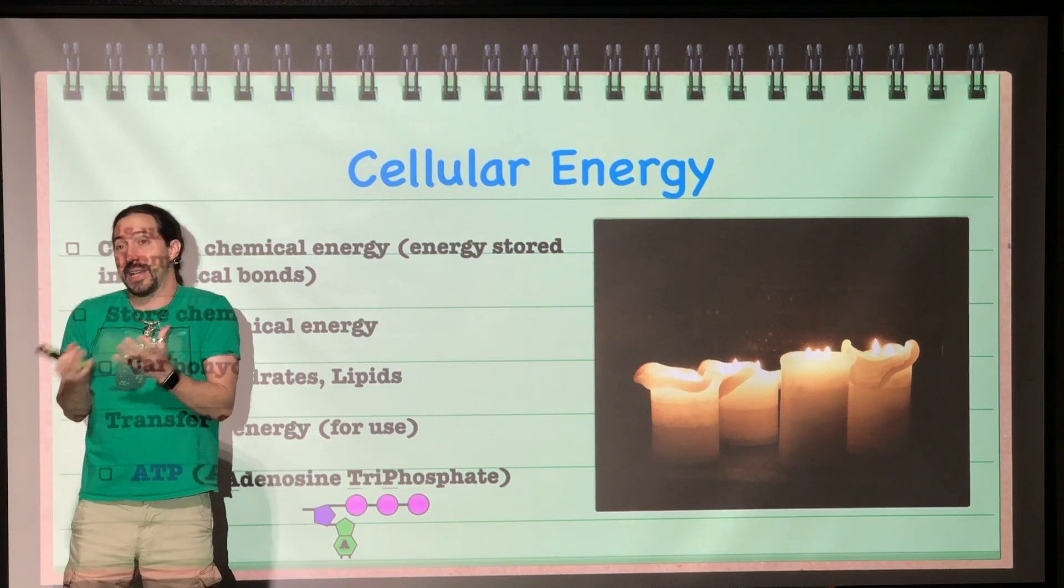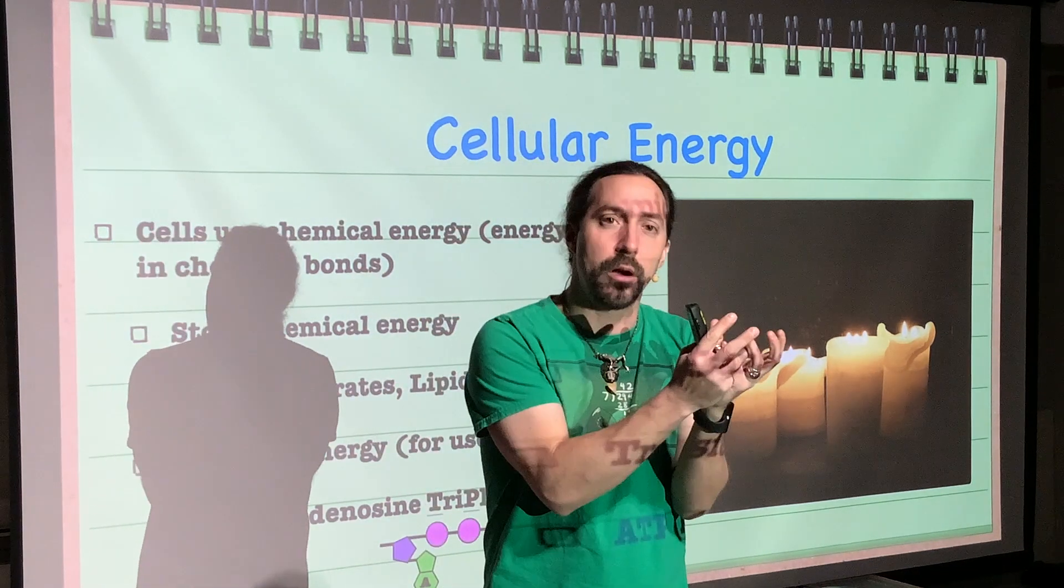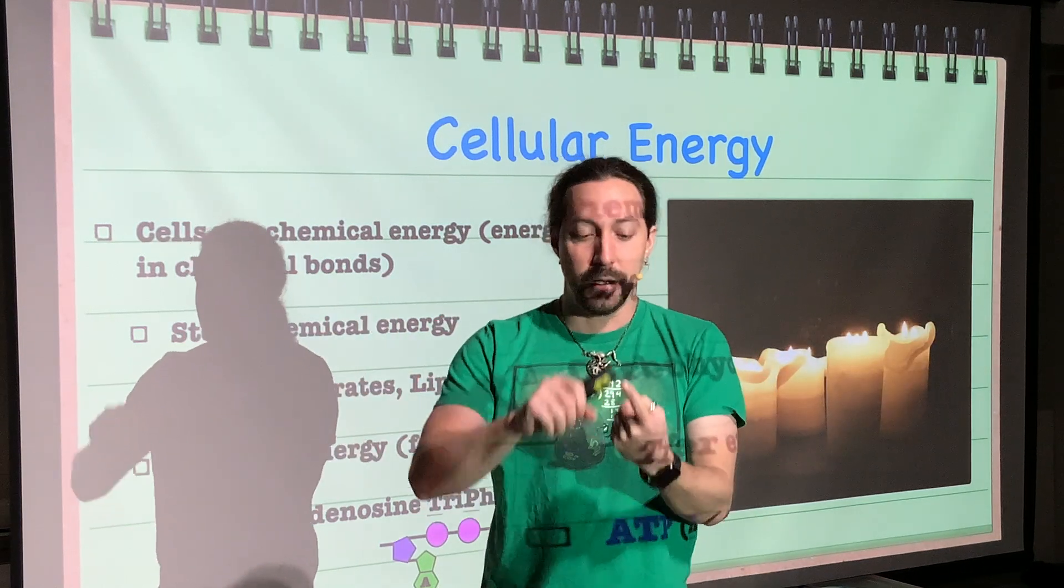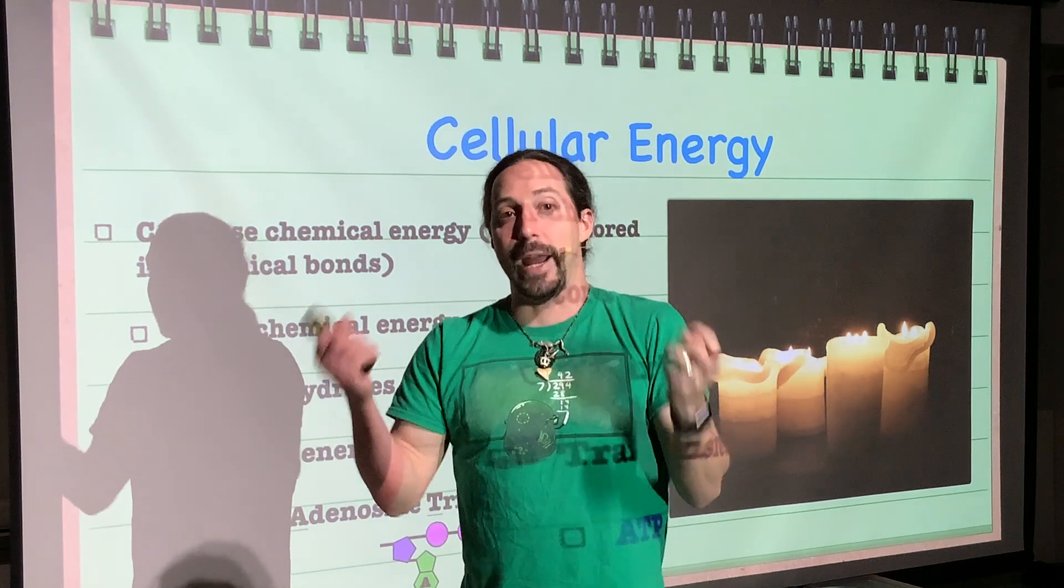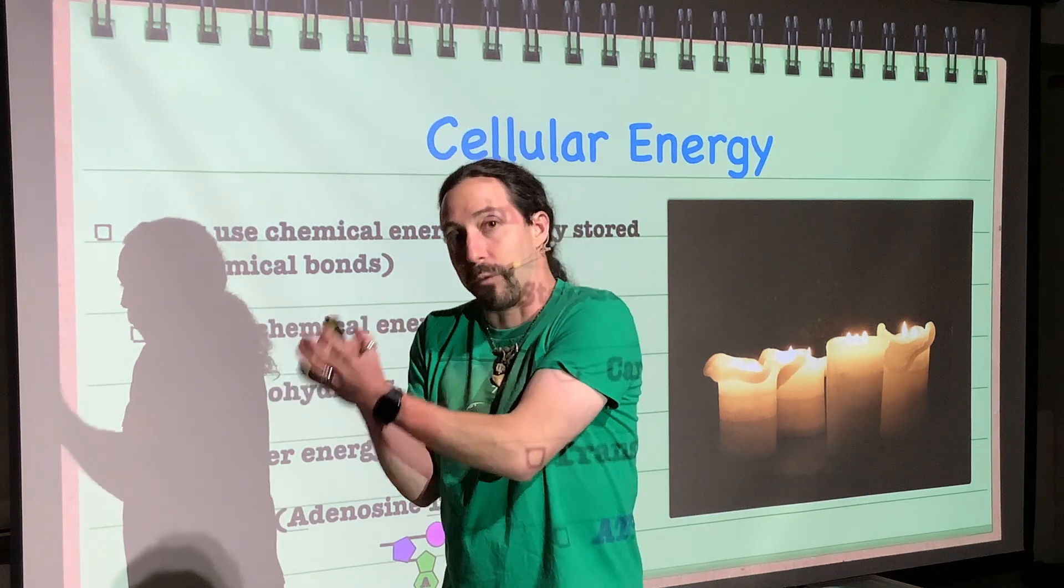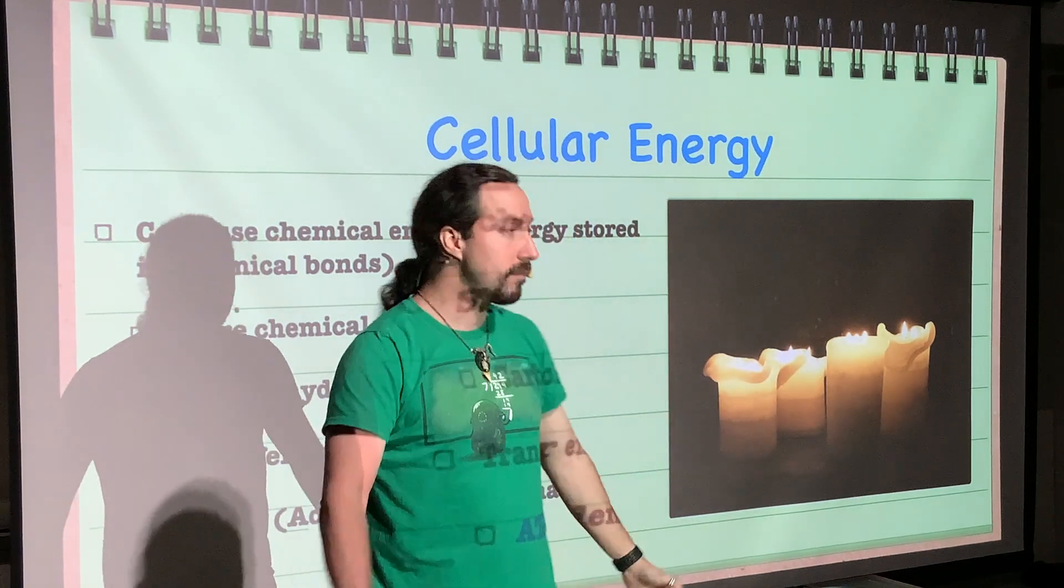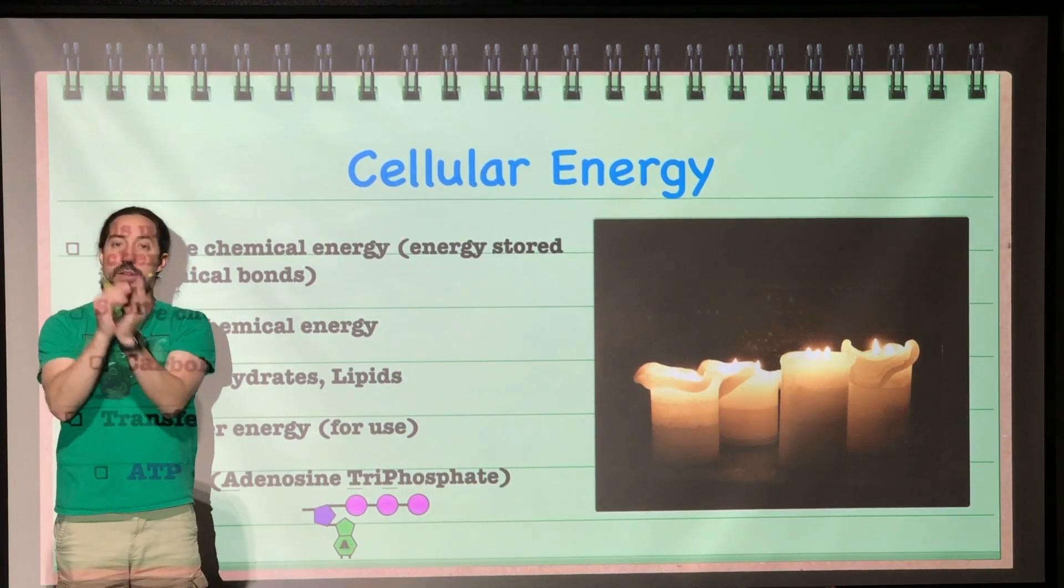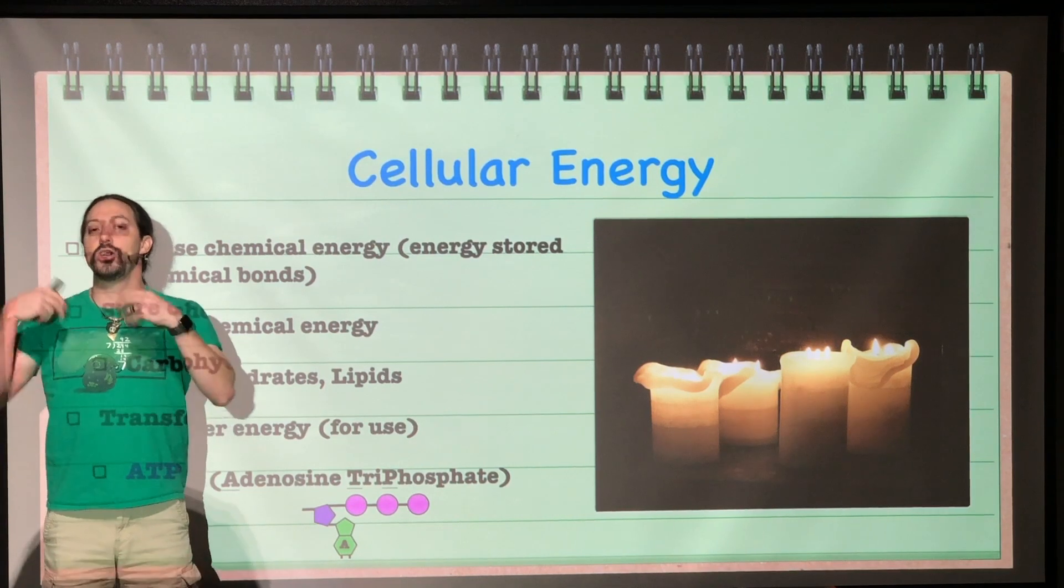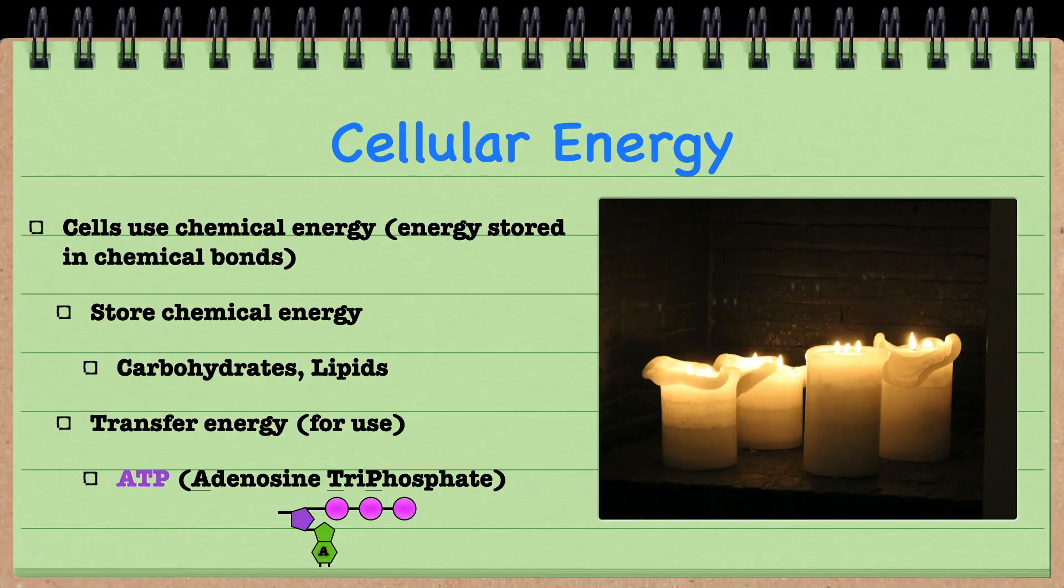But since they're so good at storage of energy, they actually end up not being very good at being an energy transfer molecule. They're not good for bringing the energy from one part of the cell to another so that the cell can do whatever it needs to do, which could be active transport, the cell growing, or responding to stimuli. For the cell to do any of those different processes, it needs the energy to be brought from one area to the area that it is required. So it needs what's called an energy transfer molecule. And the cells use a specific molecule called ATP, adenosine triphosphate. ATP is the usable energy. It is not the stored energy. It is the energy that the cell is going to use.